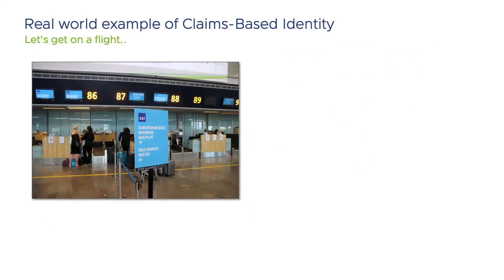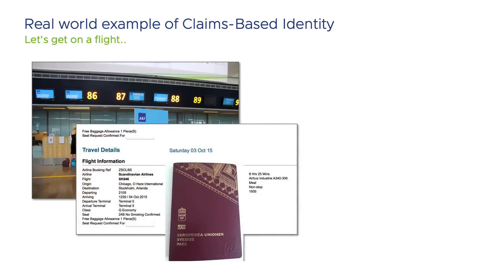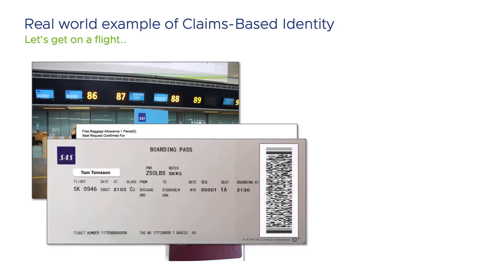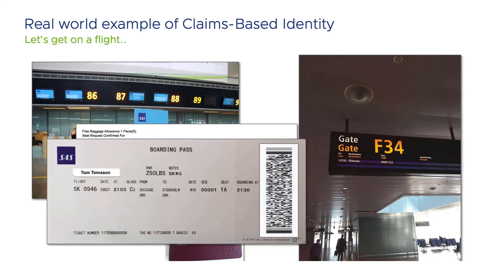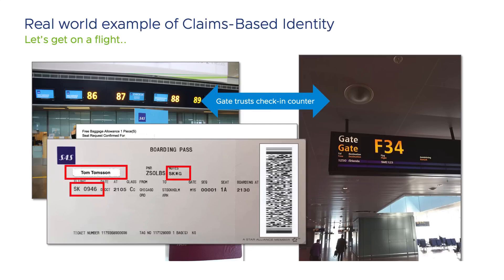Let's use a common scenario to explain the concept of a claim a little more in depth. Imagine you are about to go on a trip and you decided to fly to the destination. When you arrive at the airport, you walk up to the check-in counter. Here you provide proof of purchase of the ticket and you authenticate with the help of your passport. The check-in personnel validates your credentials and issues you a boarding pass. This is your claim, and the check-in counter is the identity provider. You walk through security, and when it's time to board, you show your boarding pass to the personnel at the gate.